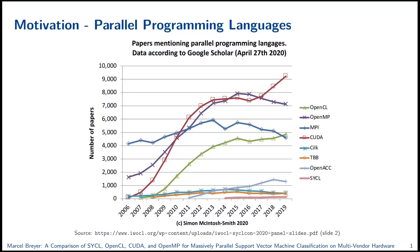So why could such a comparison be of any use? Here we have a list of eight parallel programming languages with a graph showing the number of mentions in papers. We see that CUDA is mentioned the most, followed by OpenMP, OpenCL, and MPI. However, this list isn't exhaustive — there are other parallel programming languages like HIP, Kokkos, Raja, or even the parallel STL in C++ not mentioned here. So the question arises: which language to use if you want to target NVIDIA GPUs, CPUs, or both.